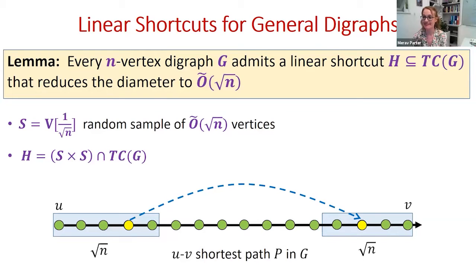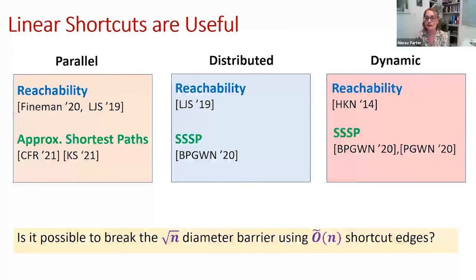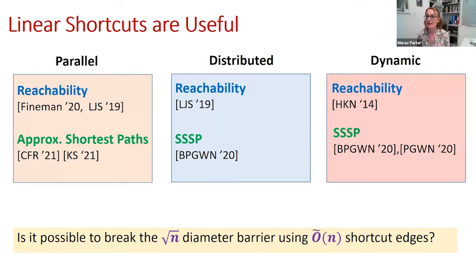Linear shortcuts are very useful. If we look at the state-of-the-art algorithms for reachability, approximate shortest paths, and fast computation in almost any non-sequential model — parallel, distributed, dynamic — all these algorithms use shortcuts in one way or another, and in particular linear-sized shortcuts. Therefore people really struggle with the question of whether it is possible to break the square root n diameter barrier using a linear number of shortcuts.